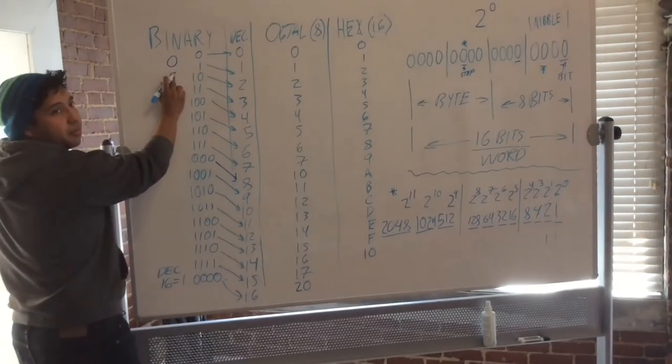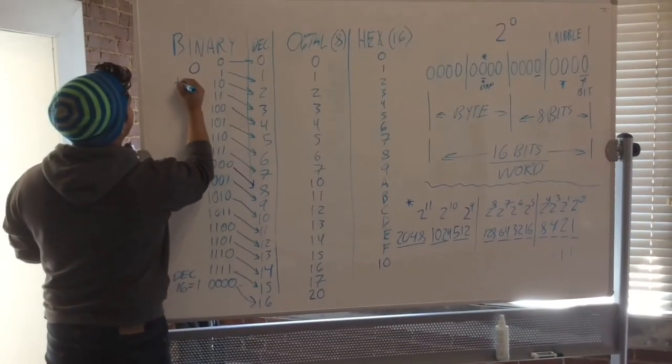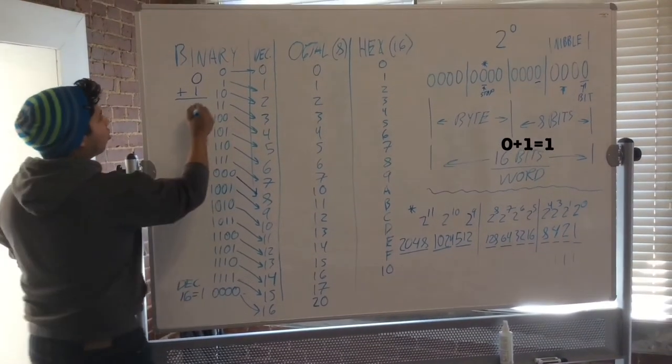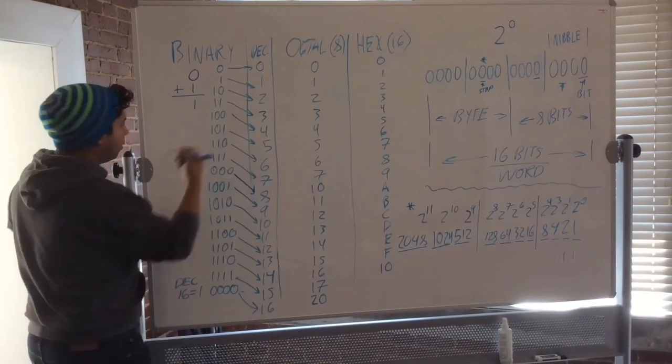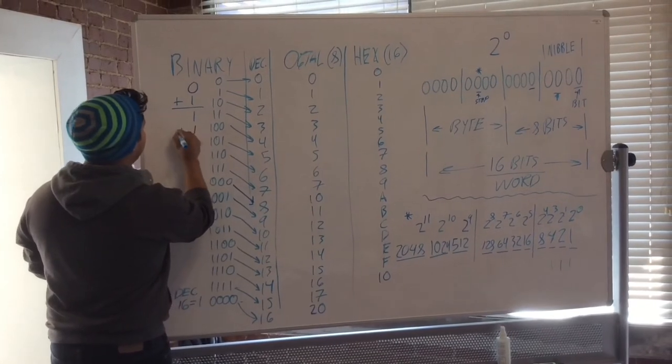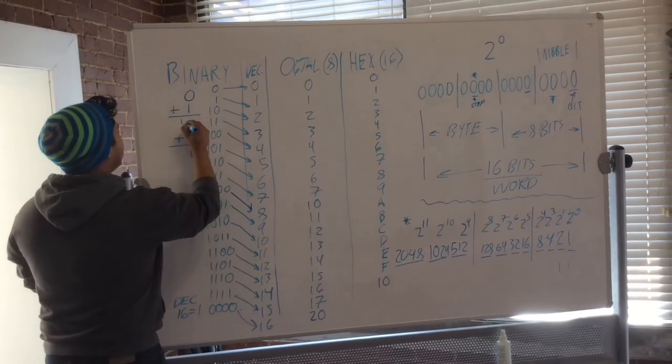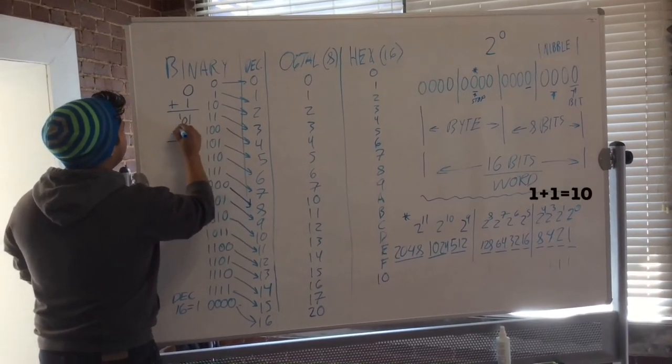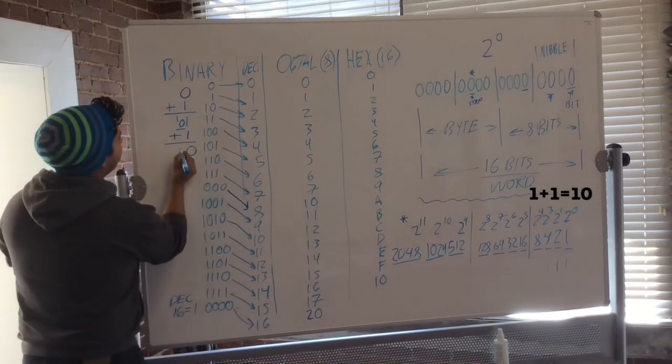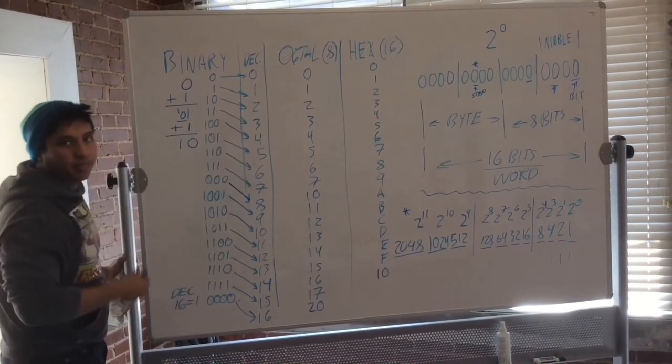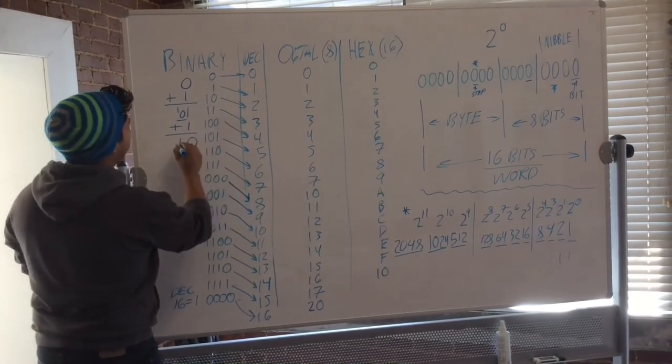You start with 0, then you put plus 1. And you get 1. 1 decimal. Then you keep adding another 1. But this time, it's going to equal to 0. 1 plus 1, 0. And you carry 1 above. And you imagine it as an imaginary 0. And you get 1, 0. Which is decimal 2. Number 2. Or binary 1, 0.